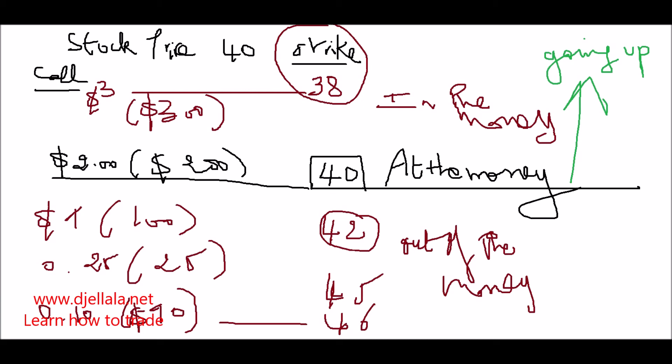If you want to buy expensive, go in the money. If you want the average, go at the money. But if you think the stock will move in a week or two, you can buy these cheap out-of-the-money options. For example, if I buy for $10 and you buy for $300, and the stock goes down, I only lose $10 but you lose $300.